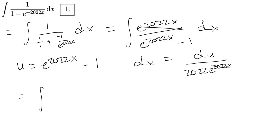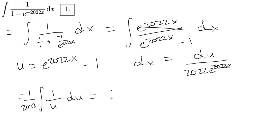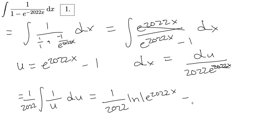So we will be left with the integral of 1 by 22 times 1 by u du, which is equal to 1 by 22 times the natural log of u, so the natural log of e to the 22x minus 1 plus c.